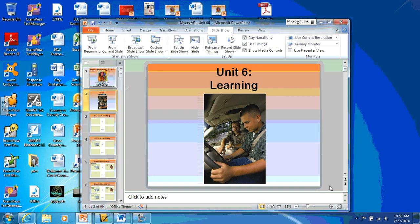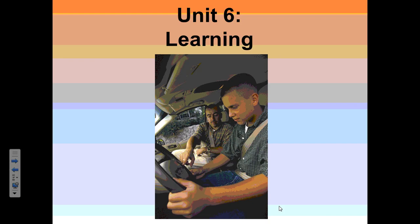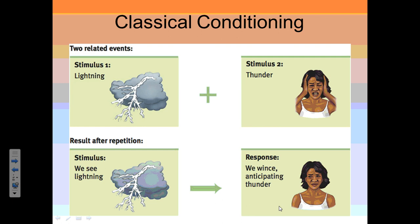All right, so classical conditioning — let's go ahead and get started. We're going over learning today. This is unit six in the AP psych book. On this digital learning day we're reviewing chapter nine from regular psych, which was also about learning. Three things we're going to cover today: classical conditioning, operant conditioning, and social learning.